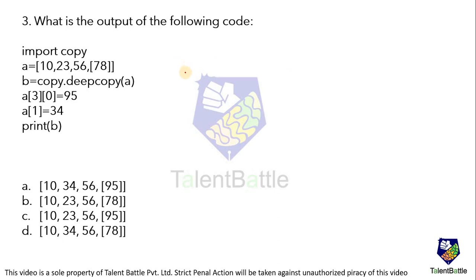Some questions will also be related to code snippets — not specific to any language, but here a question is provided based on Python. The question asks: what is the output of the following code? You will not get any option to execute the code, so you have to figure out the output based on your understanding. The module copy has been imported. List A is a list within a list, and B is assigned using copy.deepcopy — so the deep copy functionality is utilized. After that, modifications are made to A at specific indices, and then B is printed. Since deep copy is used, modifications to A will not affect B.